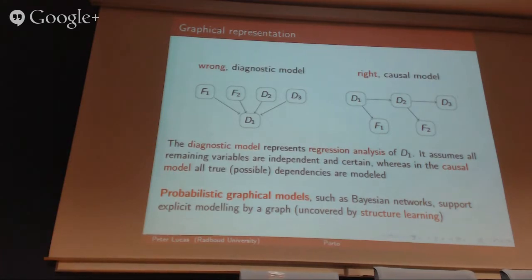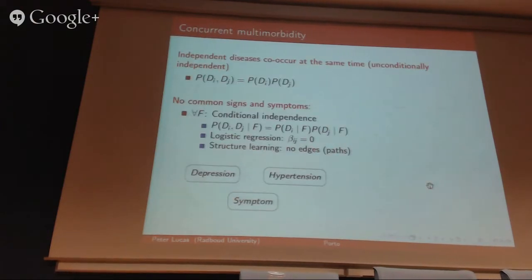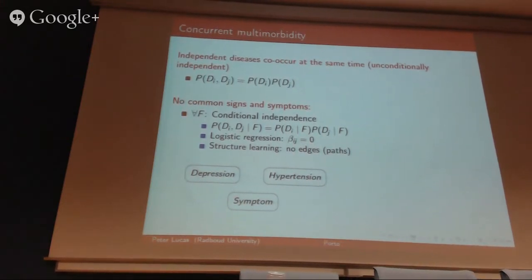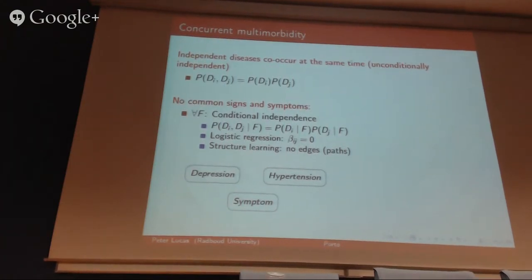That gives you a much clearer picture of how diseases interact and also gives you an explanation of the interaction between findings and diseases. That basically means a Bayesian network, which I could try to learn from the available data by means of structure learning. This has a couple of advantages. Let's try to understand this in terms of the problem of multimorbidity again.